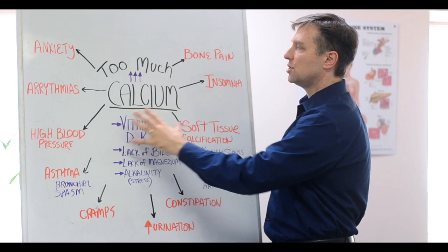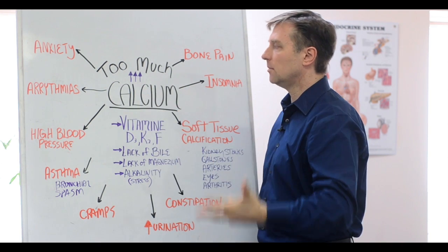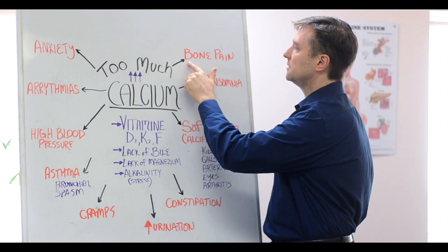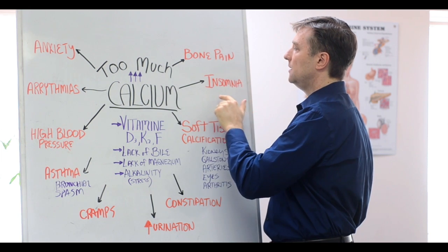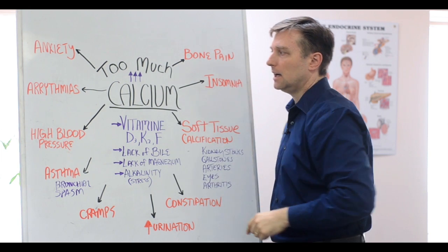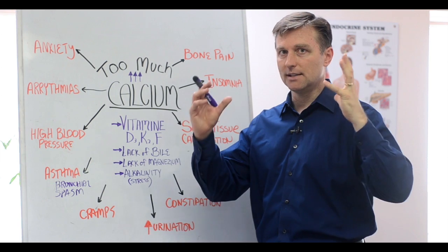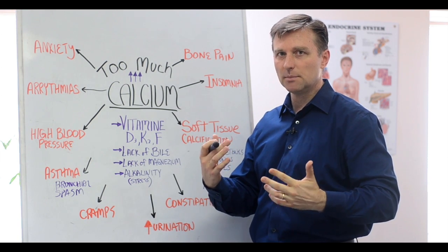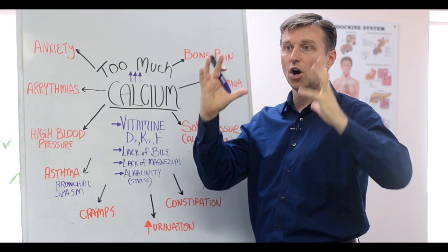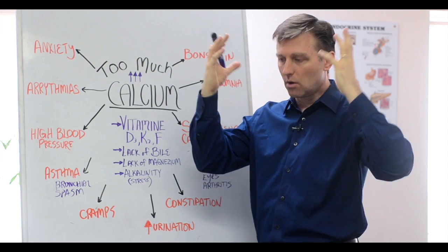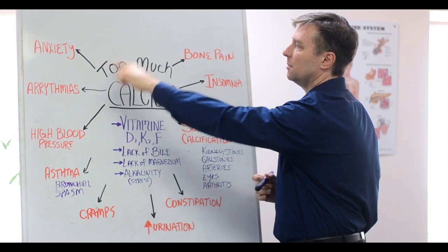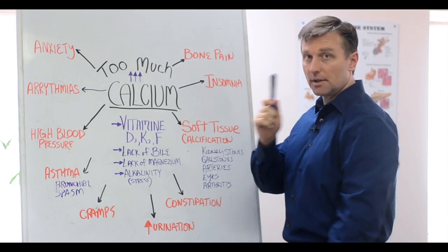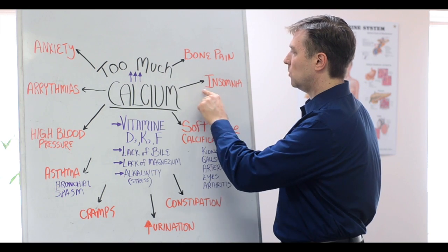So if someone has too much calcium or too much unavailable calcium, they will get some bone pain. They'll have insomnia, especially of the head. So let's say you're exhausted and you need to sleep, but your head won't turn off. It's very active. It won't go to sleep. That means you have too much calcium. I'll talk about the remedies in a little bit, but that's one of the symptoms.